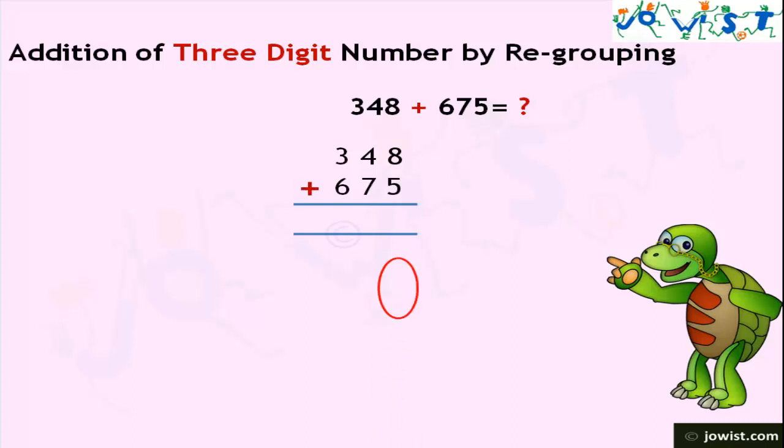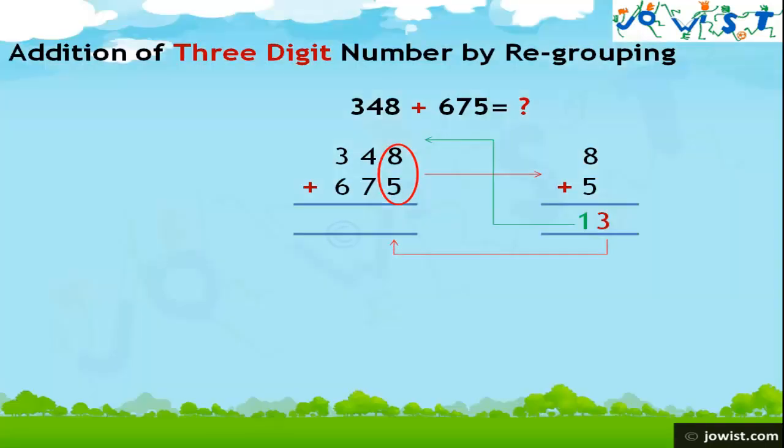We will start from the rightmost numbers, the numbers in the ones place. Adding 8 and 5 is 13. 13 has a value of 1 ten and 3 ones. Digits at left place has value 10 times that of immediate right. 3 will be written at the ones place in the result and 1 will be carried over to tens place.